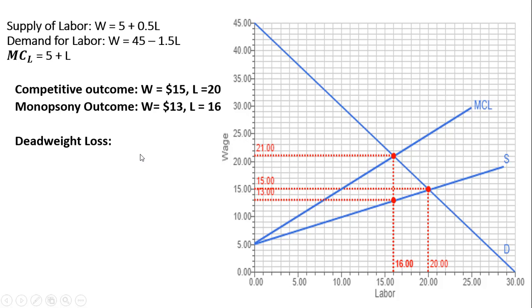In terms of the deadweight loss, the deadweight loss is going to be this triangle right here. The difference between the demand curve and the supply curve, between 16 and 20 units of labor. So we're going to calculate the area of that triangle using 0.5 base times height. The base of this triangle is just 20 minus 16, and the height of this triangle is 21 minus 13.